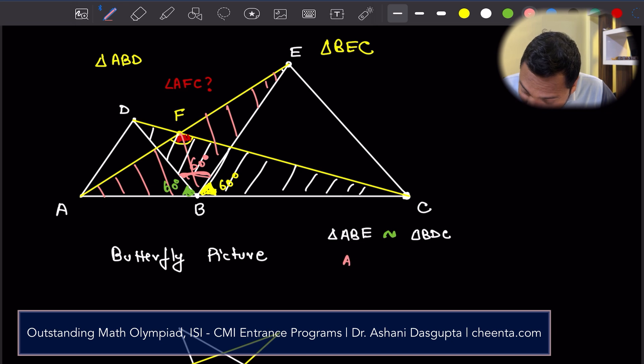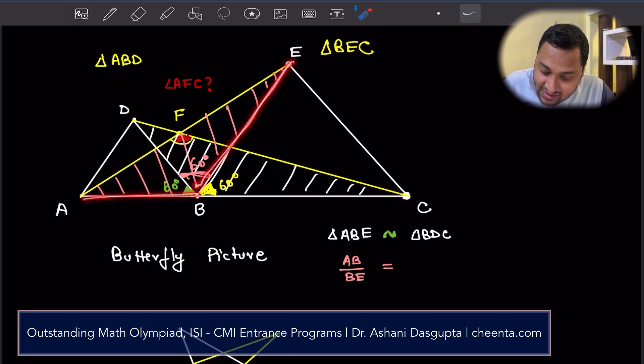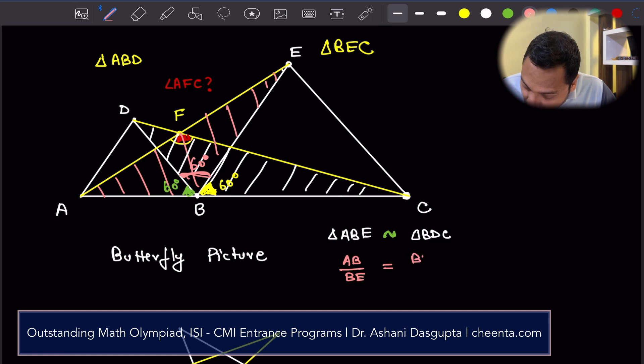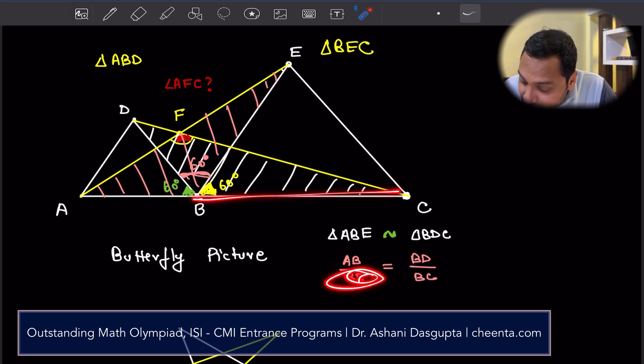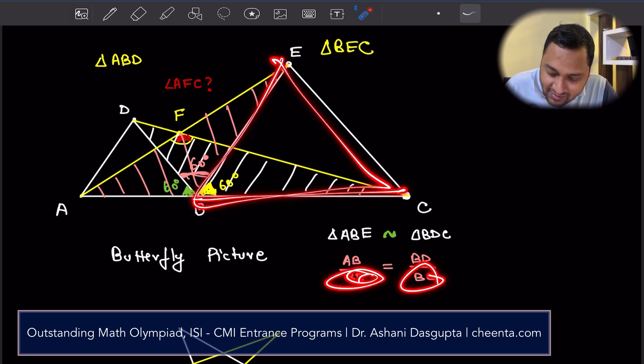Now we also know that AB over BE is equal to BD over BC. BD over BC. In fact, the ratios are not only equal, they are lengthwise same. Because AB is equal to BD, and BE is equal to BC. Because this is an equilateral triangle, BE is equal to BC. This is an equilateral triangle, so AB is equal to BD.